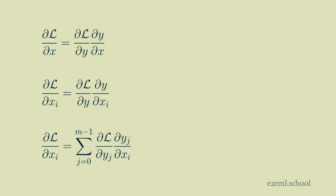By the chain rule of calculus, the way that we get the partial derivative of loss with respect to x is we take the partial derivative of loss with respect to y and multiply it by the partial derivative of y with respect to x.